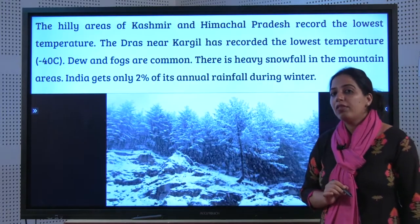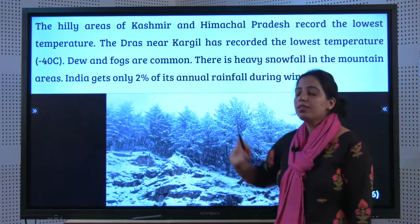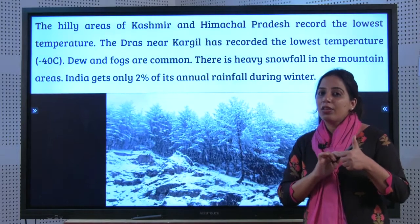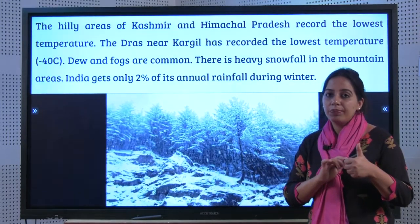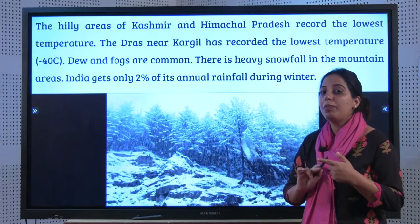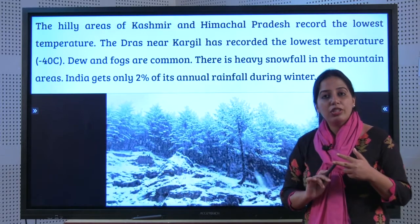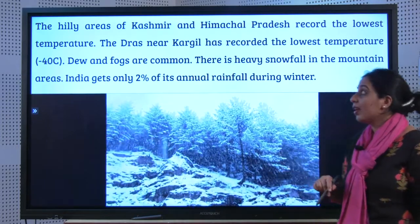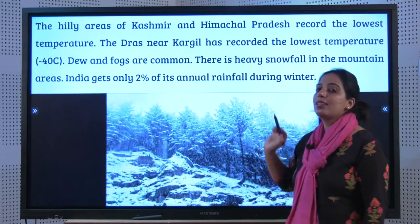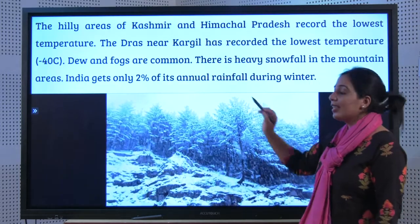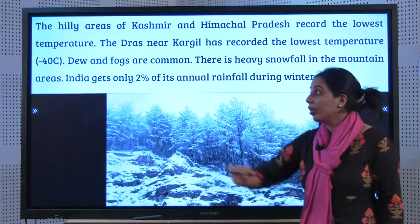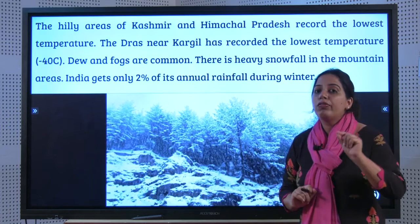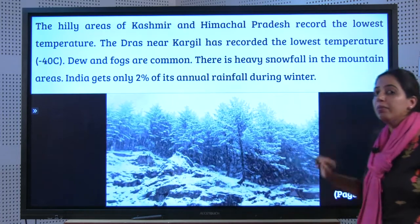India receives just 2% of its annual rainfall during the winter season. To summarize: the sun's rays are vertically over the Southern Hemisphere, so the Northern Hemisphere gets oblique rays. Temperature and rainfall are low, sky is clear, January is the coldest month, Drass near Kargil recorded the lowest temperature, dew and fog are common, and only 2% of rainfall occurs. All these points are important from an exam perspective.